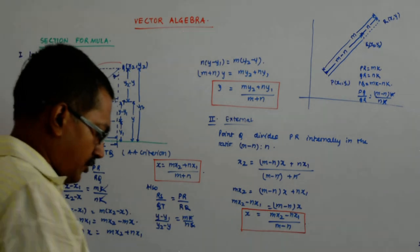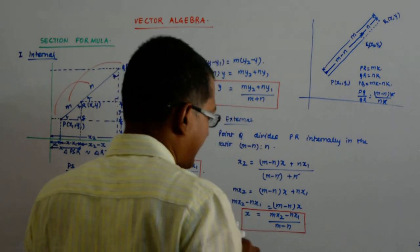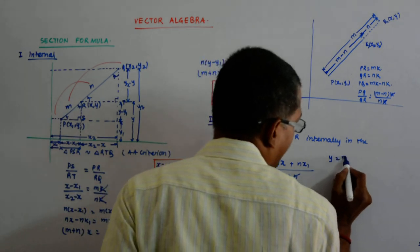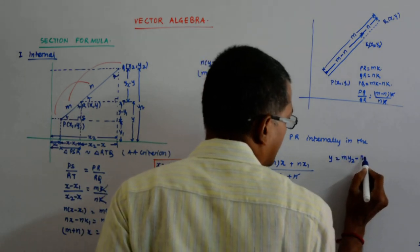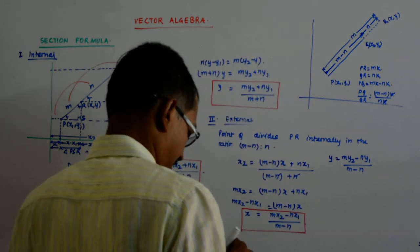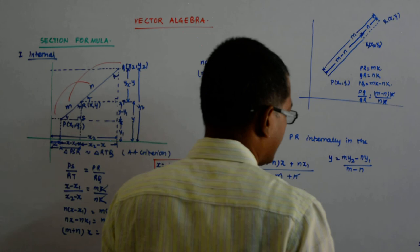And similarly, you will get y as, I am not deriving it. You do the same thing with y, you will get y as m y 2 minus n y 1 upon m minus n.